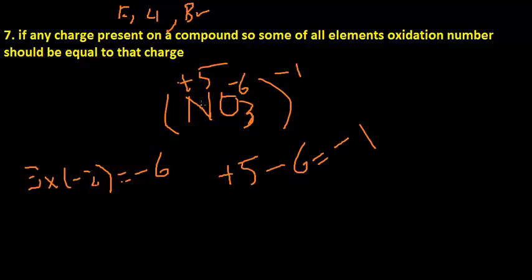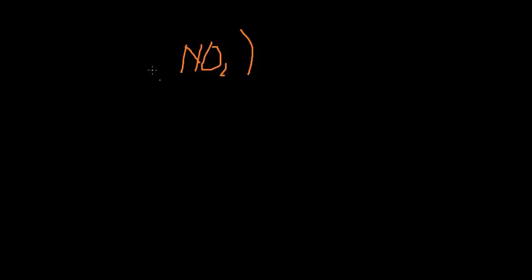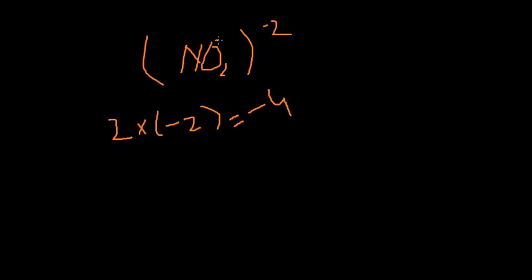Suppose we have NO₂²⁻ with a minus two charge. Two oxygens are present; oxygen has minus two, so 2 × (−2) = −4. We have to find the oxidation number of nitrogen, which would be plus two, because plus two minus four equals minus two. So that's how we calculate the oxidation number of any element in a compound. Thank you for watching.